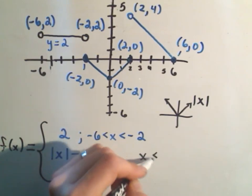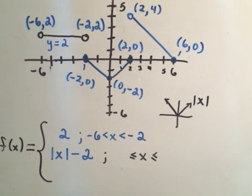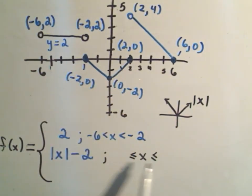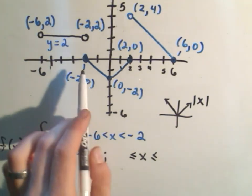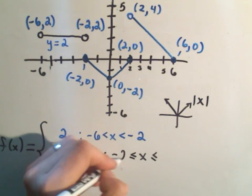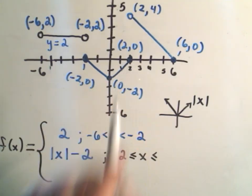And again, since they're solid on either point, I know I'm going to use greater than or equal to and less than or equal to. So for the V, the smallest x-coordinate that gets used is -2. The largest x-coordinate that gets used is positive 2.